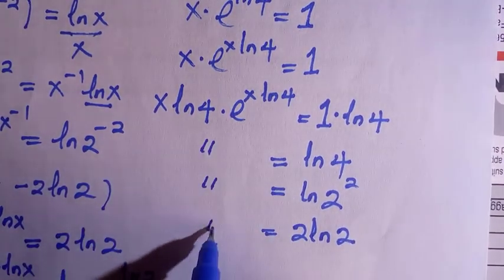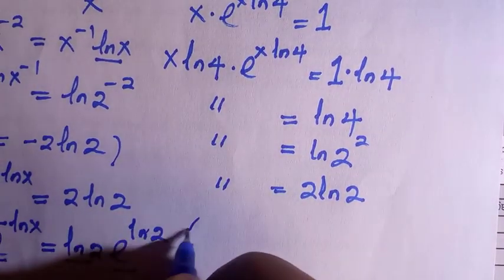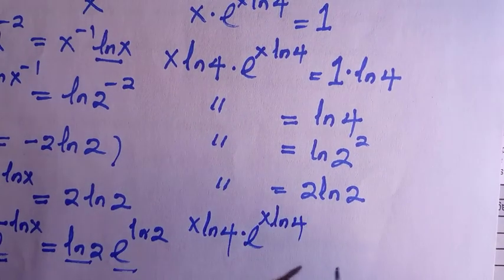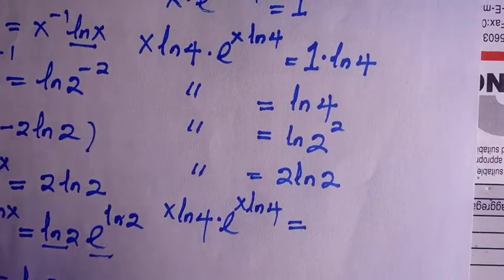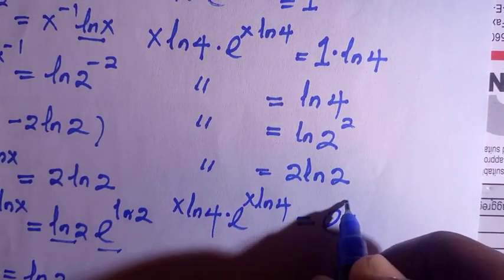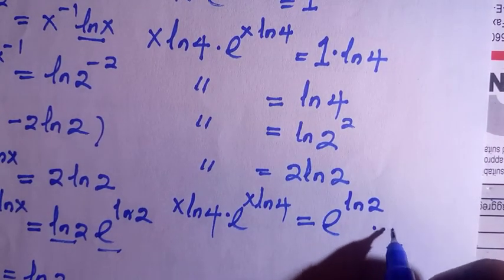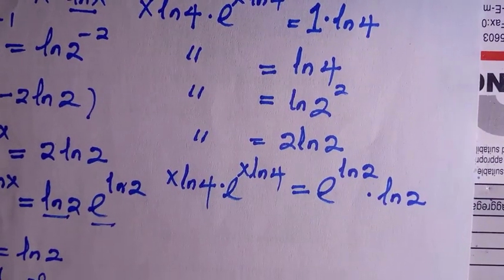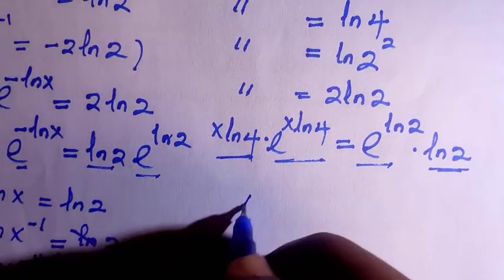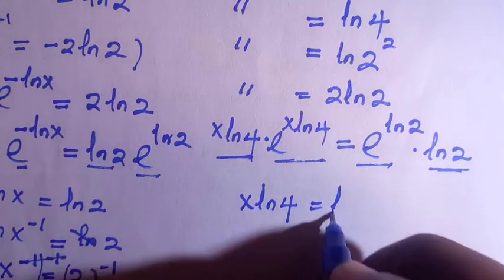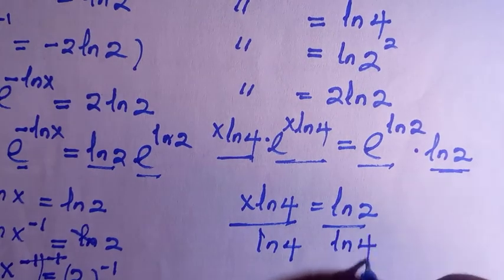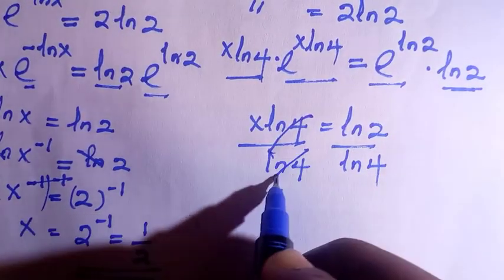So we have x·ln 4 times exponential of x·ln 4. For the right-hand side, I introduce exponential and ln, giving exponential of ln 2 times ln 4. Now both sides can be compared. Comparing these two together, we have x·ln 4 on the left. Dividing throughout by ln 4 leaves only x.